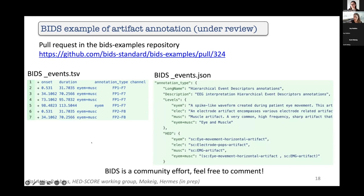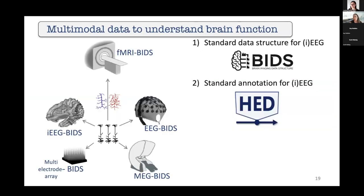An important note is that BIDS is a community effort. Please feel free to comment if something is unclear, add questions, or contribute a use case for a BIDS example. Now that we want to integrate multimodal data to understand brain function, BIDS allows us to do that from a general structure perspective, and we can also use standard annotations — especially across intracranial EEG, EEG, and MEG — to describe artifacts and tag them with HED SCORE schema libraries.